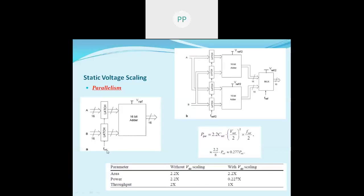In this slide, parallelism is shown for a 16-bit adder implementation. One block is duplicated, and the latches operate at f_reference frequency, but in parallelism the blocks operate at half the frequency. Because more time is available, voltage can be scaled down from V_reference to V_reference/2. The estimated power is approximately 2.2 × C_reference × (V_reference/2)² × (f_reference/2).